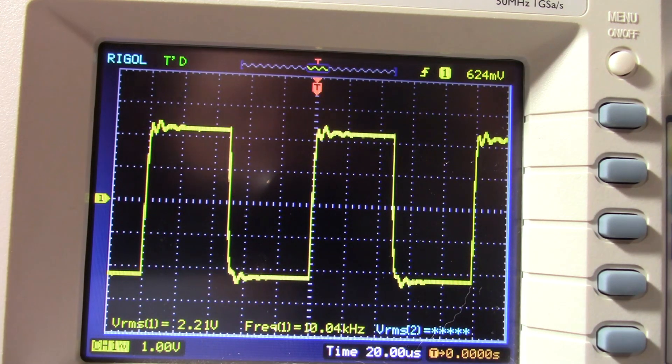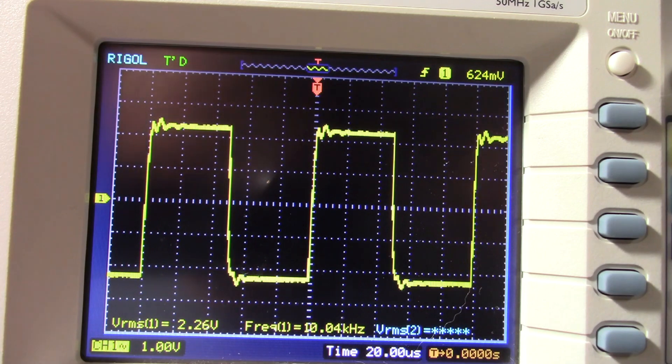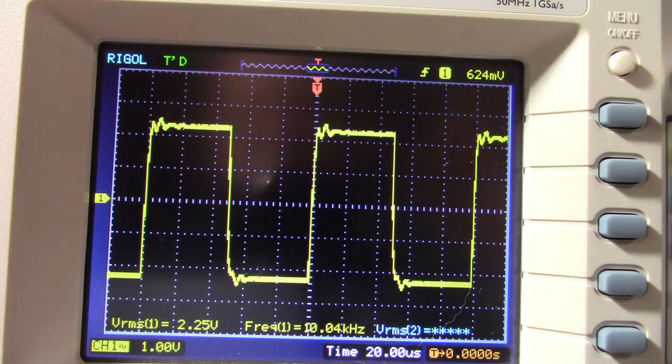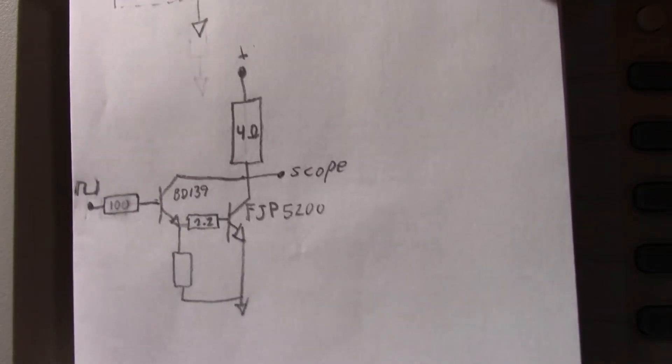Well, it is performing a lot better than those Darlingtons. Those monolithic Darlingtons are a lot slower, even though those Darlingtons have built-in speed-up resistors here.